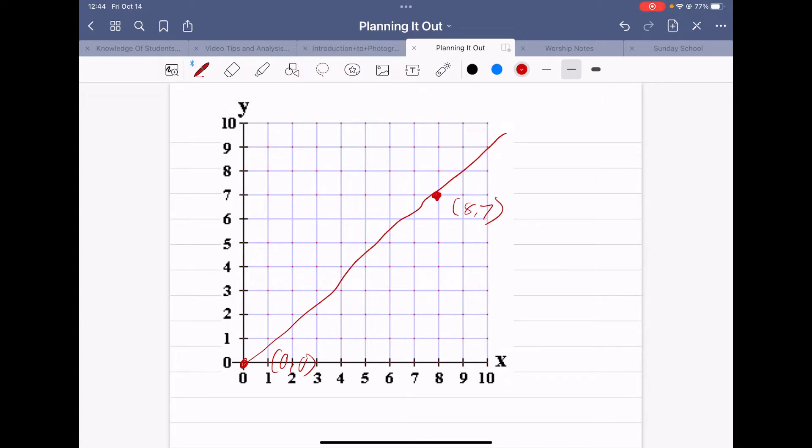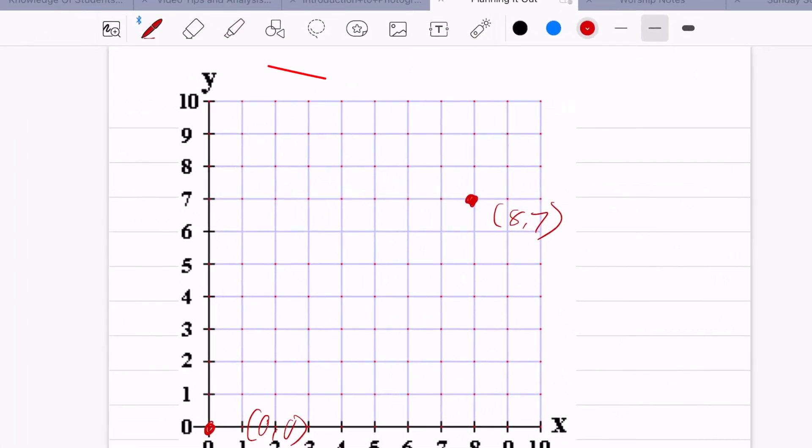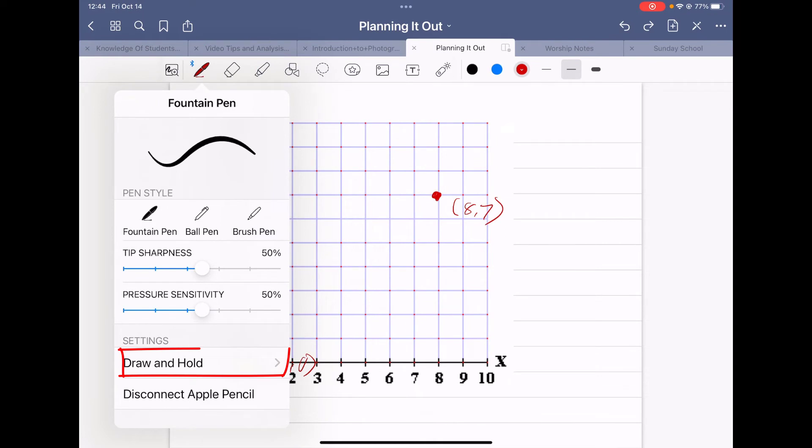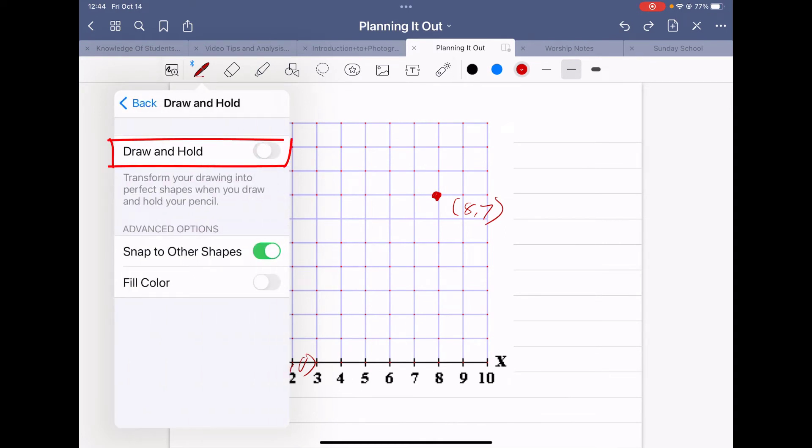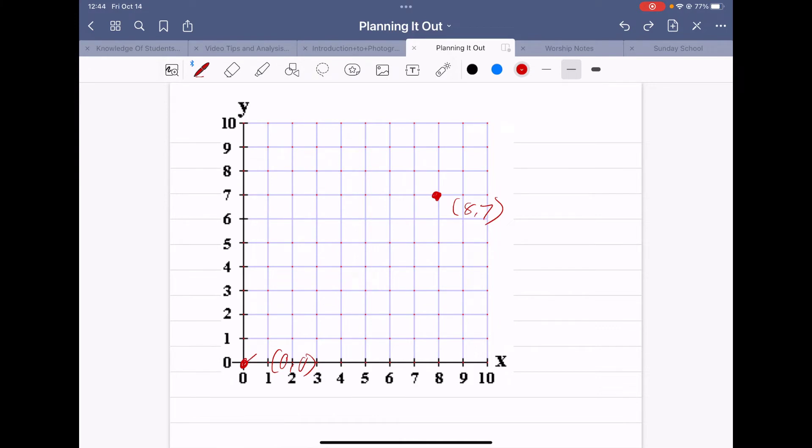But luckily for us, GoodNotes gives us another resource. If I take and hit my pen button again and then click over here and hit 'Draw and Hold', now I can take and start at that origin.